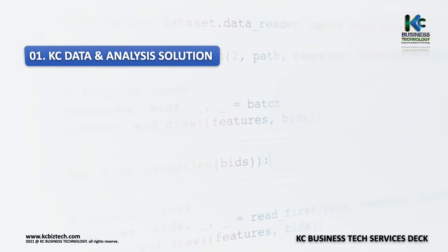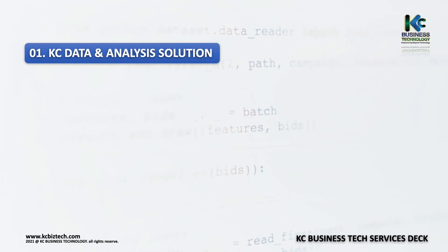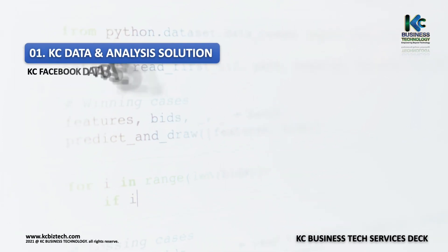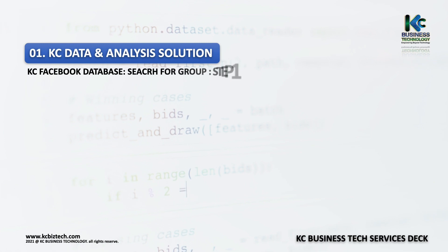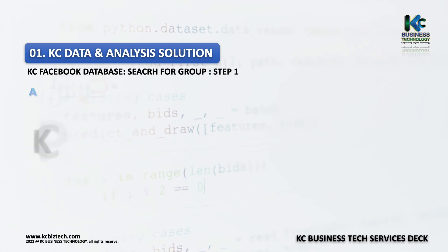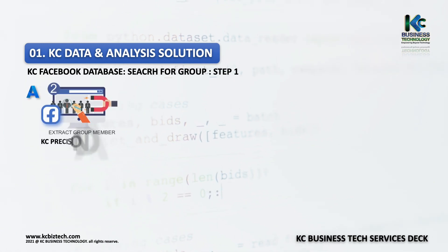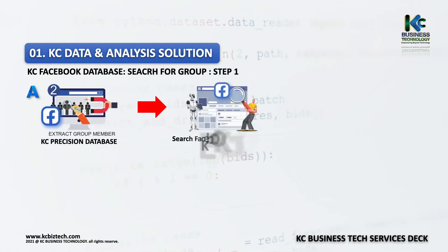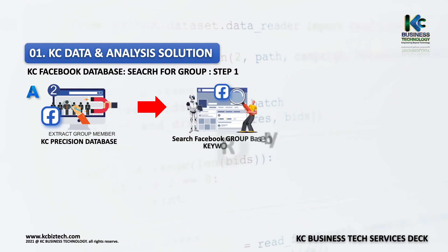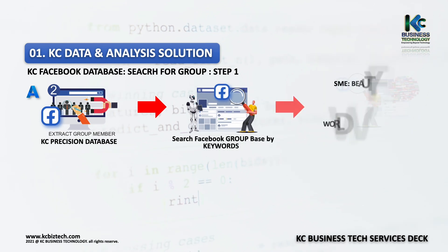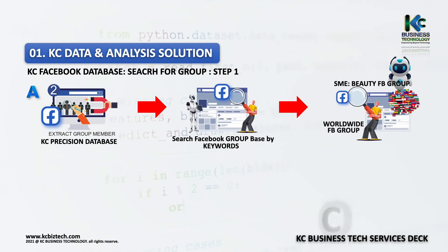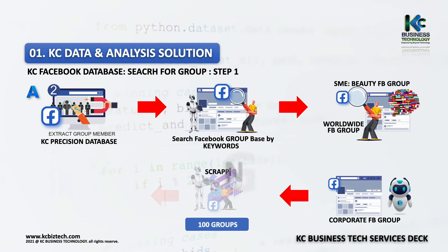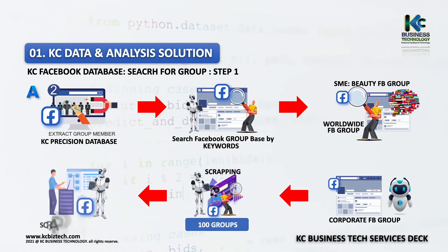KC Facebook Database Search for Group — Step 1. A. KC Precision Database: Search Facebook Group Base by Keywords — Worldwide FB Group, Corporate FB Group. Scrapping and Scrapping in Progress.